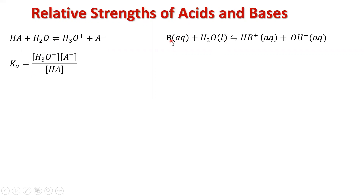Here is a generic base — I'll just label it B; it could be any base. We looked at weak bases as typically having nitrogen in them, amine groups, because of that lone pair of electrons that tends to accept or attract hydrogen ions. If we look at a base ionization, we take that base and add it to water.